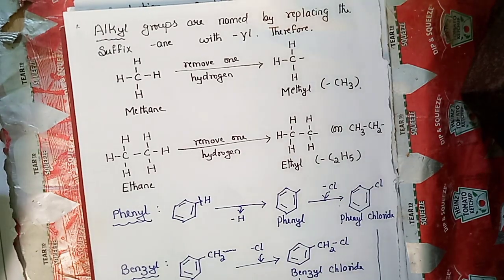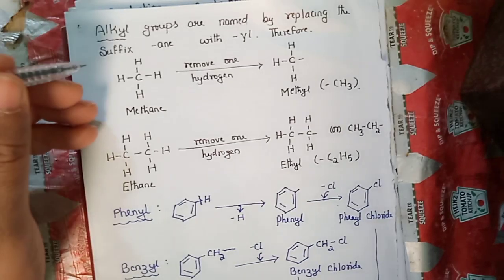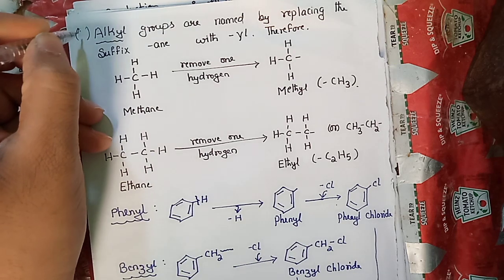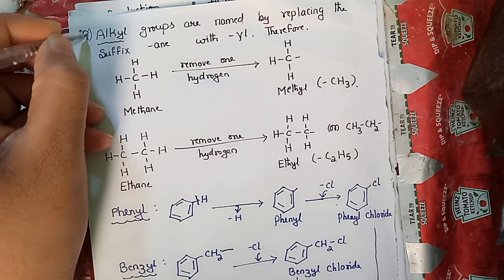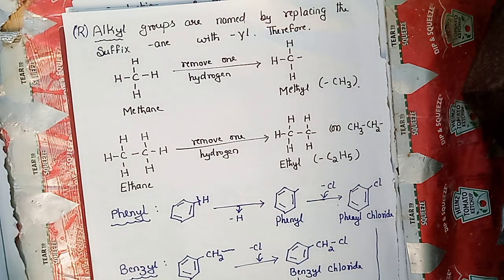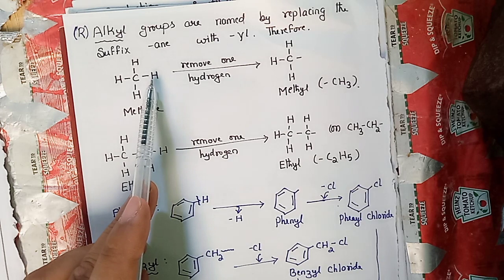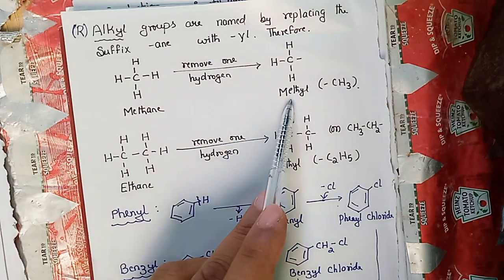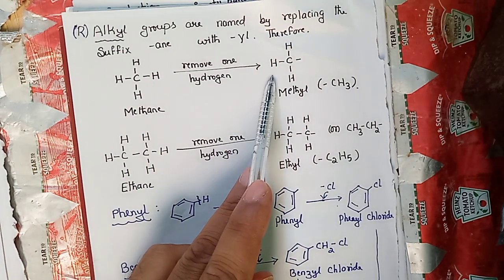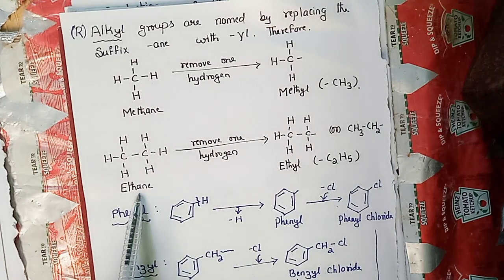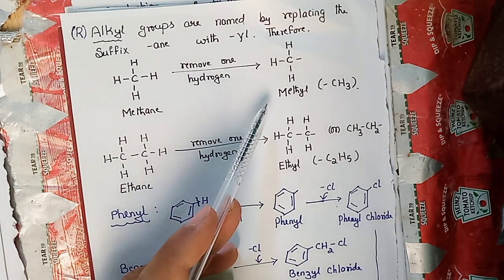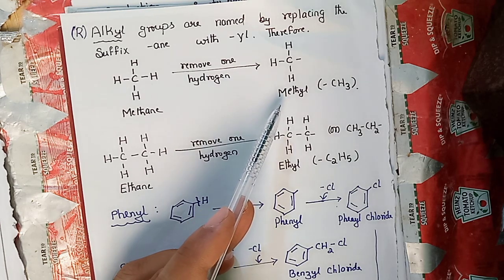Today's chapter is haloalkanes and haloarenes, one of the most important chapters in organic chemistry. Let us recall the basic information about the alkyl group. Alkyl group is represented as R. In first PUC, we learned that when you remove one hydrogen from an alkane, it becomes an alkyl group. For example, methane when it loses one hydrogen becomes the methyl group, represented as CH3. Similarly, removing one hydrogen from ethane gives CH3CH2, or C2H5, called the ethyl group.